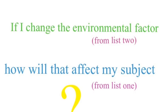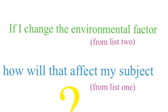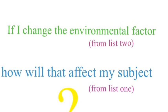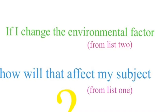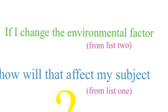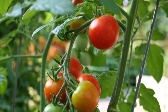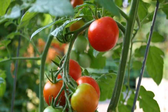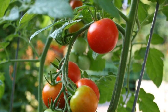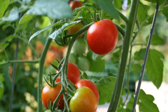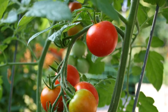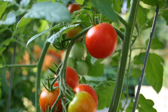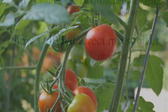So to put it simply: if I change the environmental factor, how will that affect my subject? And that's how you write a science question. If I change the amount of water, how does that affect the size of the tomato? If I change the soil type, how does that affect the height of the plant?